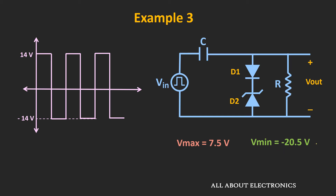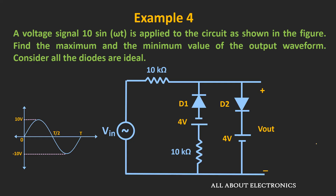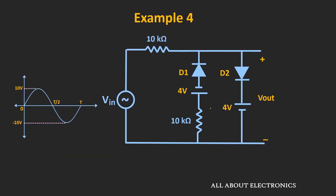These were a few examples based on the clamper circuit. Now let's see a few examples based on the clipper circuit. In this example, a sine wave is applied to this clipper circuit, and we have been asked to find the maximum and the minimum value of the output waveform. If you observe this circuit, diode D1 will conduct whenever the voltage at the anode is greater than 4V — in other words, whenever the input voltage Vin is greater than 4V.